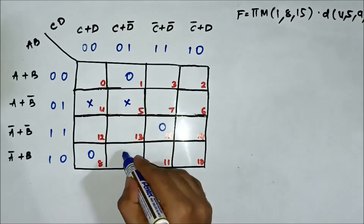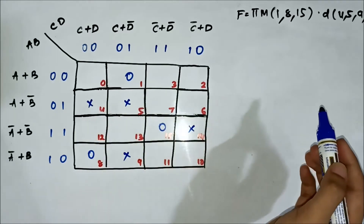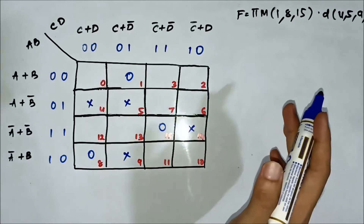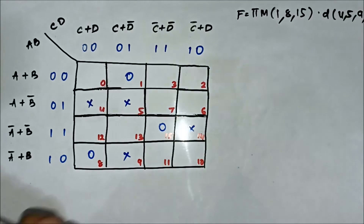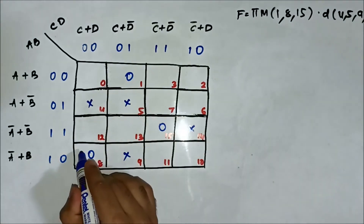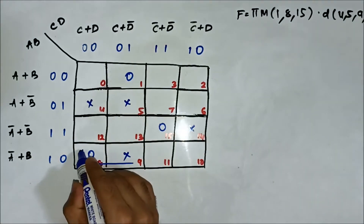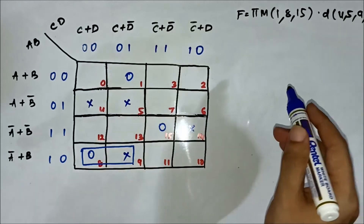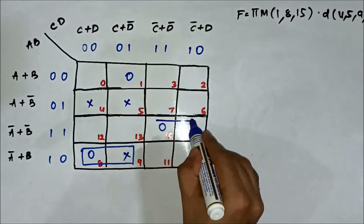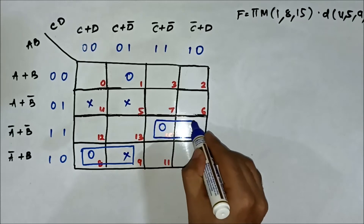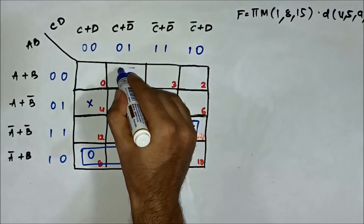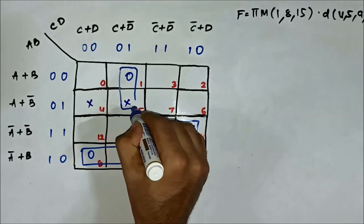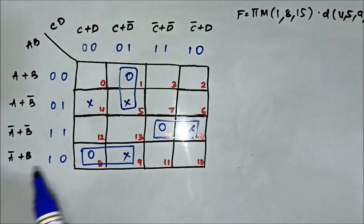Now we have to form the groups. We can form a pair involving cells 8 and 9, then another pair involving cells 14 and 15, and another pair involving cells 1 and 5. Cell 4 will be left behind — no need to form a group for it.